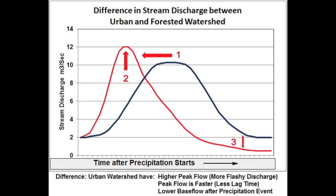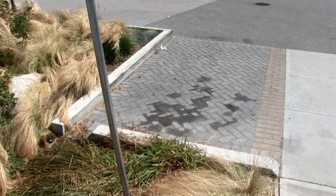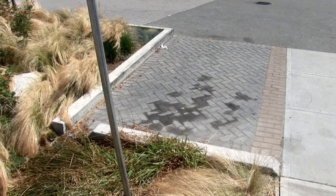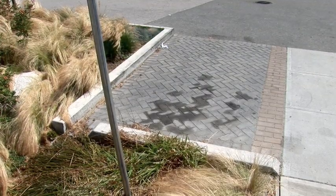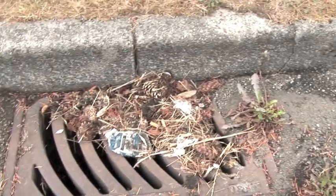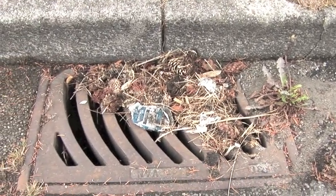Three, it lowers base flow. Impervious surfaces prevent subsurface and groundwater stores from being recharged by rainfall. Groundwater provides a continuous base flow to streams and is an important source of flow in the dry season. Stormwater runoff also picks up contaminants, such as oil and grease, from roads and parking lots. These untreated contaminants end up in water bodies.